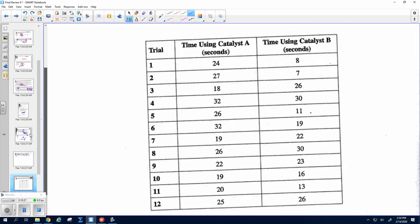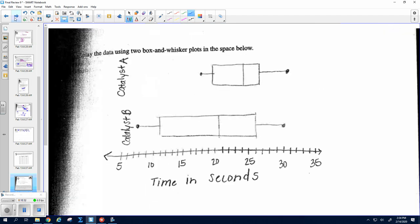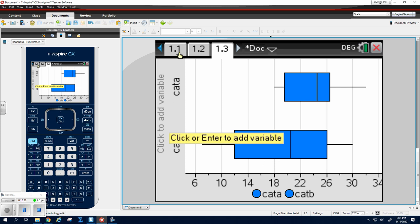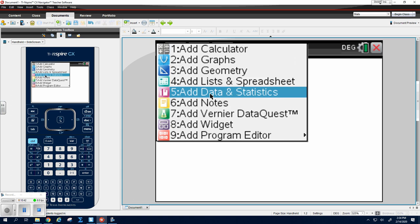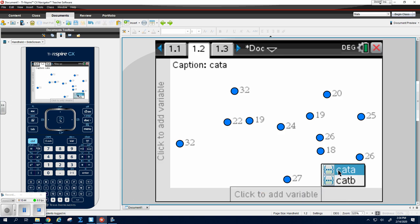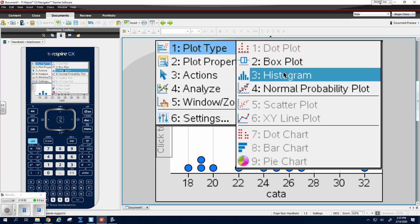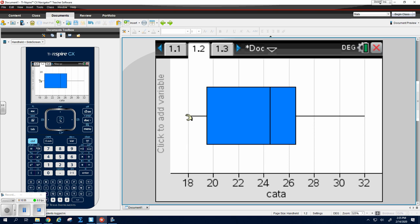Alright, I would type these into your calculator, list 1 and list 2. And that way, your box and whisker, you don't necessarily have to run the five-number summary. So once you type it in, you can go to Control-Doc, Add Date and Statistics, and let's put Catalyst A on here. And then go to Menu, Plot Type, change it to a box plot. And you can actually plot them on the same page. But let me show you, too. If you highlight or hover over, you can get your Q1 or your min, your Q1, your median, et cetera.